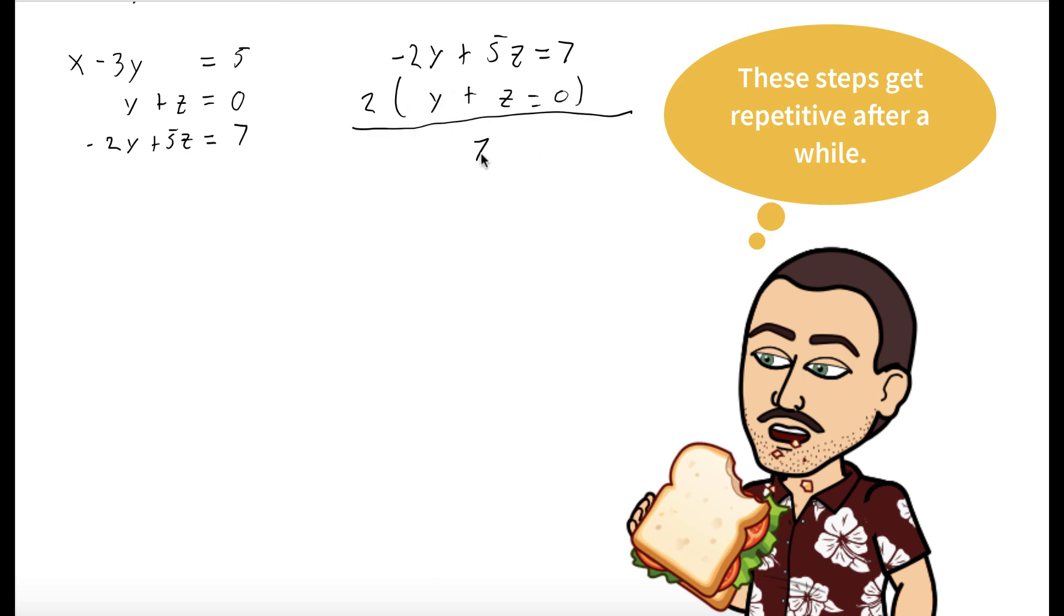And when we do that, we get 7z equals 7, and this will be our new third equation.